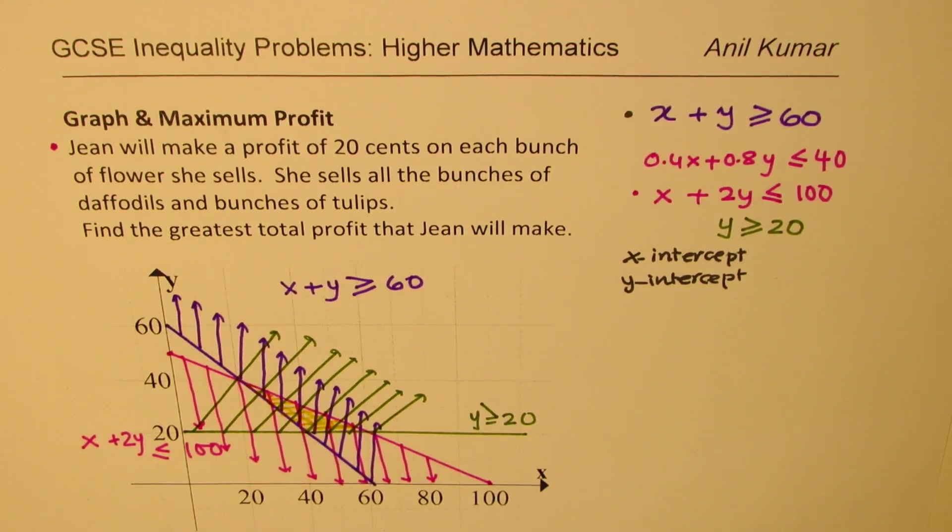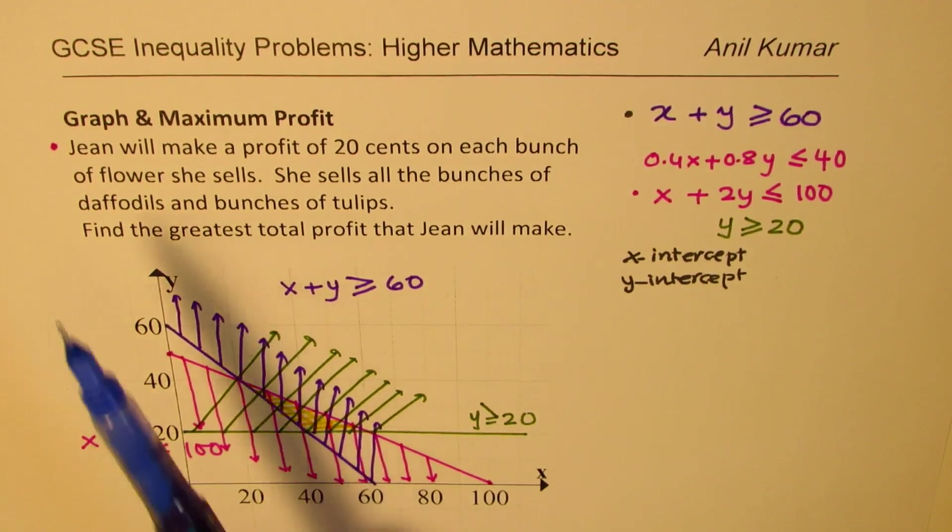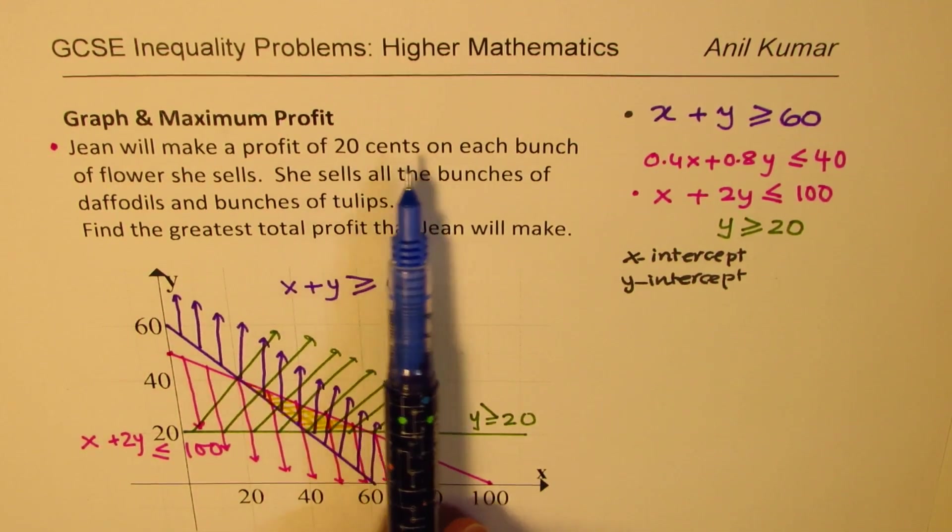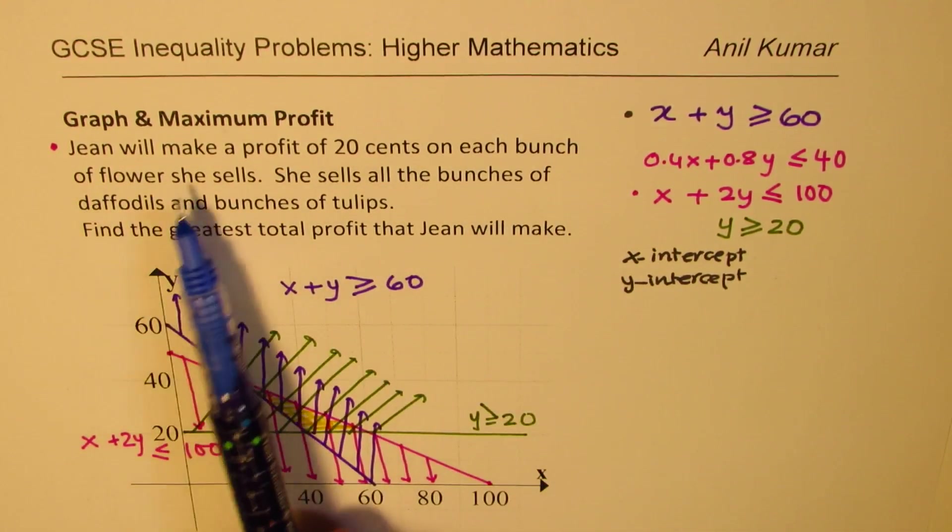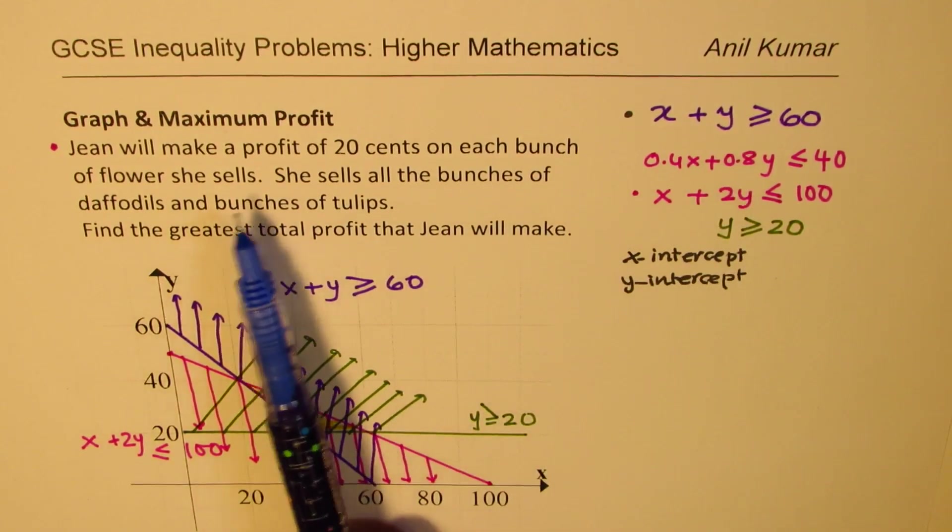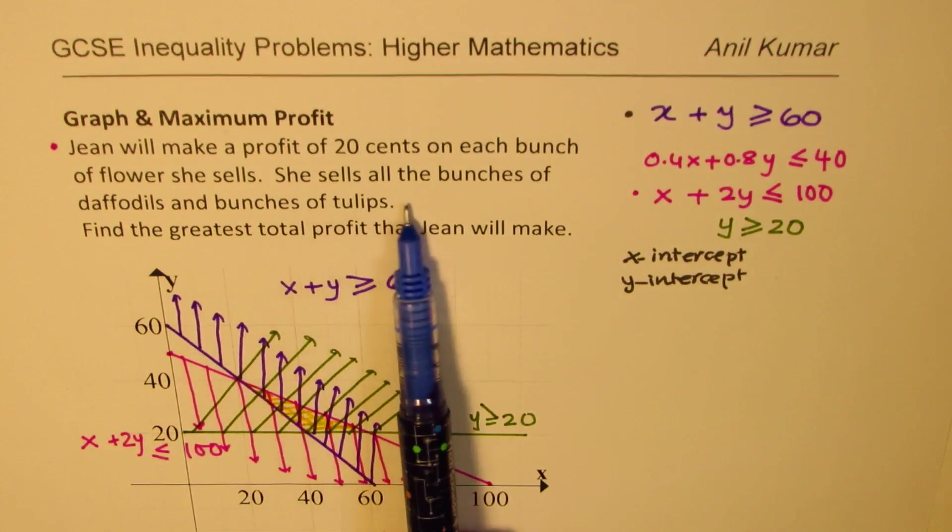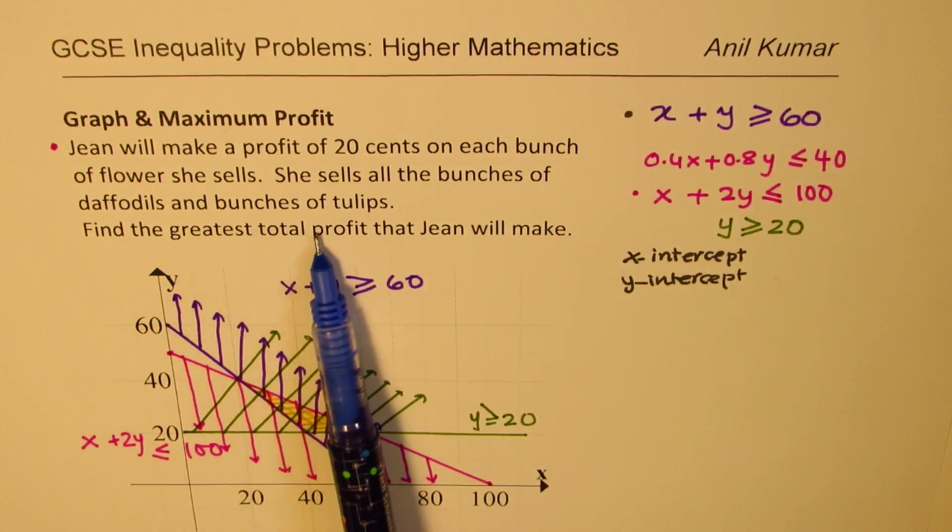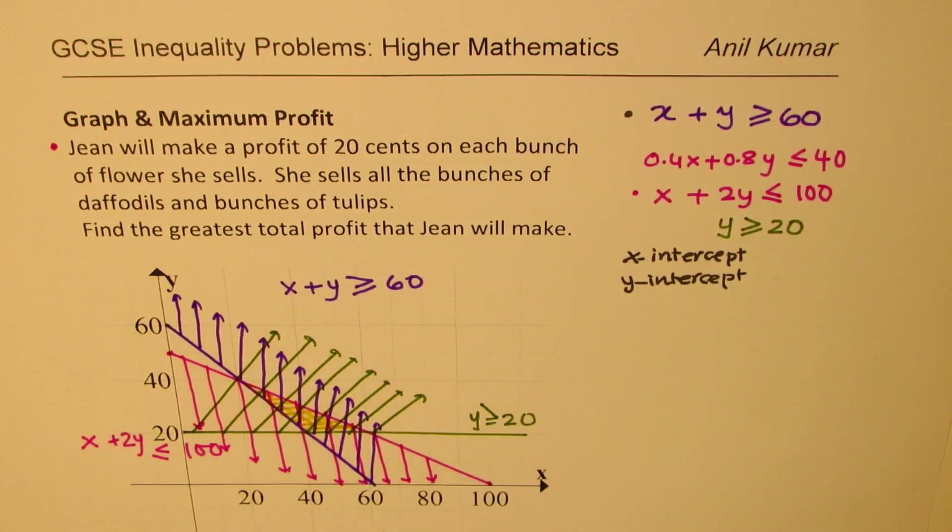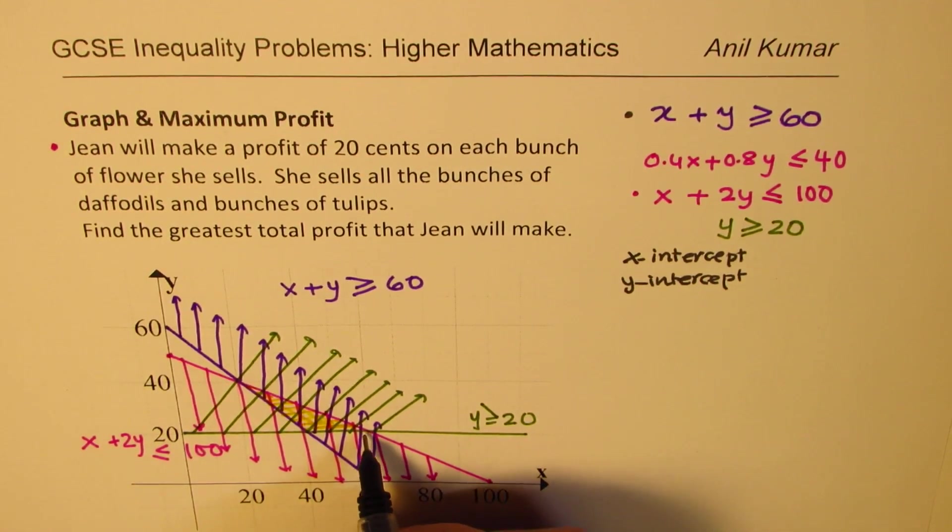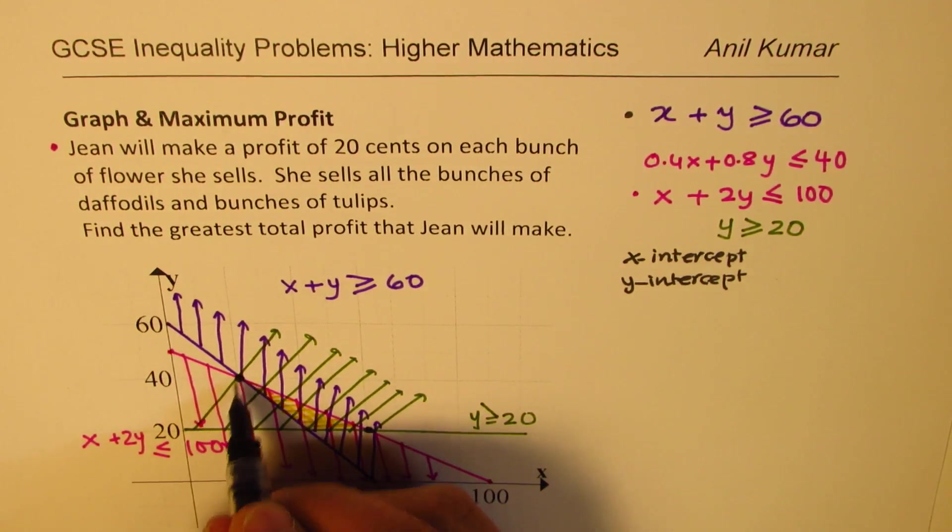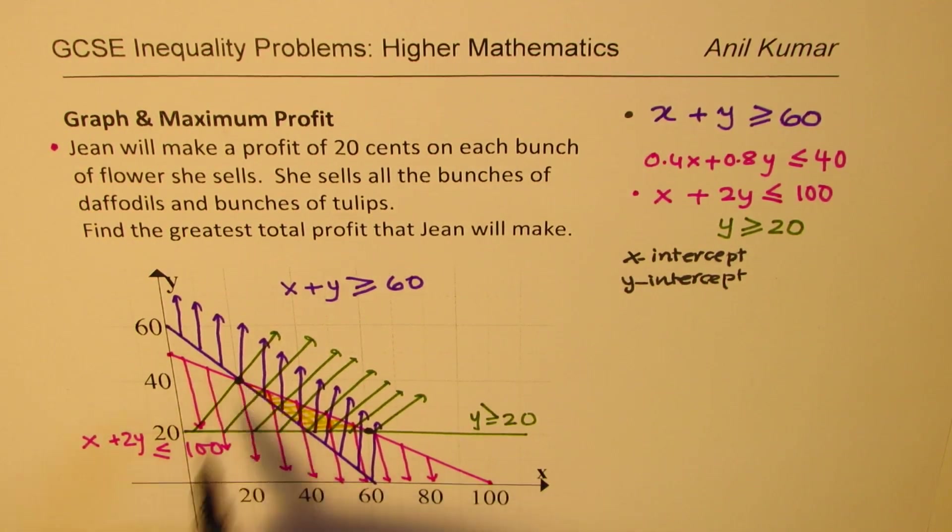Perfect. Now let's look into the last part of the question which says, Jean will make a profit of 20 cents on each bunch of flowers she sells. So whether it's tulip or daffodil, 20 cents per flower. She sells all bunches of daffodils and bunches of tulips. Find the greatest total profit that Jean will make. So basically it is number of bunches. So let's see what could be the maximum profit. So we need to analyze these points of intersections.